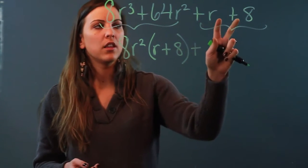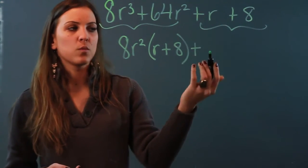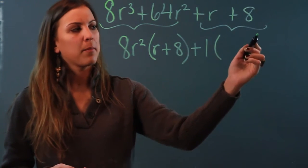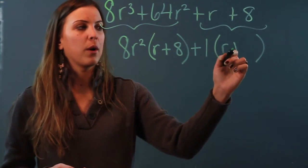Now the only number that can go into both r and 8 is 1, so I'm going to have to factor out just a 1. When I factor out a 1 in my parentheses, of course I'm still just left with r plus 8.